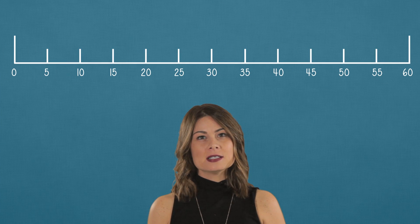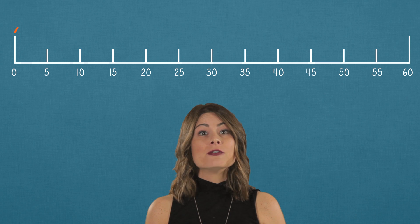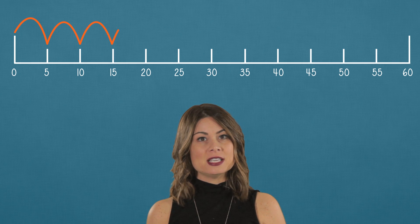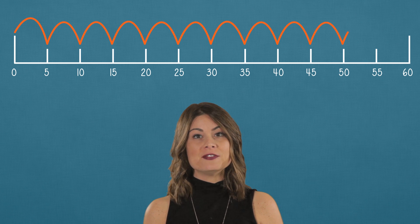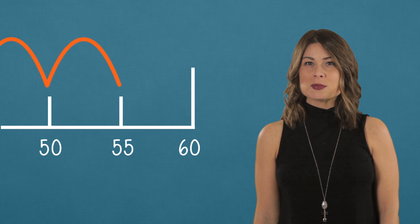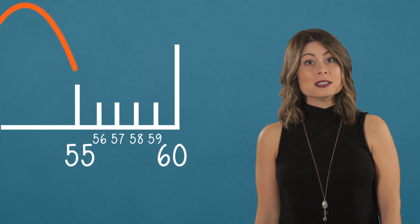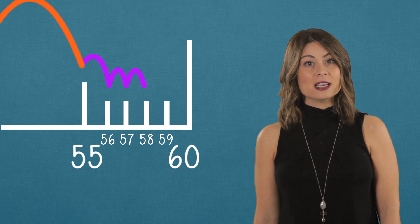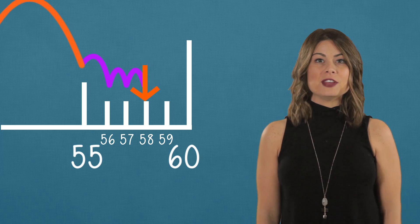Well to get there, we don't have to count by 1s. Let's count by 5s: 5, 10, 15, 20, 25, 30, 35, 40, 45, 50, 55. Now let's visualize those four small tick marks. Perfect. Now we can count by 1s: 56, 57, 58. There we go, we found 58.